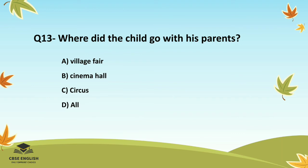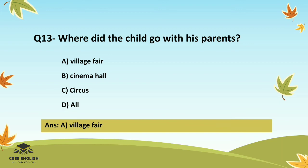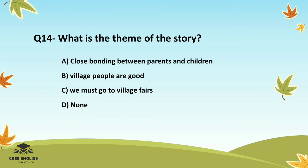Question number thirteen: Where did the child go with his parents? Options are: village fair; cinema hall; circus; or all. The correct answer is village fair.